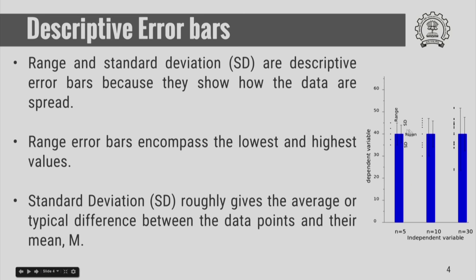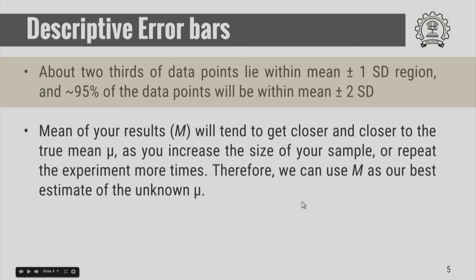The important thing to remember here is that as you change the sample size from n equals 5 to n equals 10 to n equals 30, your range error bar is increasing. However, your standard deviation error bar more or less remains constant. About two-thirds of data points lie within the mean plus or minus one standard deviation region, and roughly 95 percent of data points will be within mean plus or minus two standard deviations.